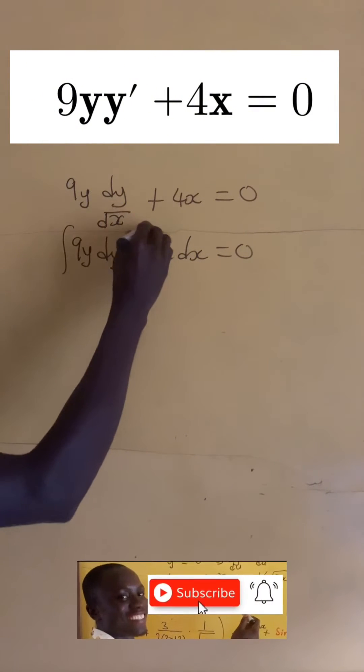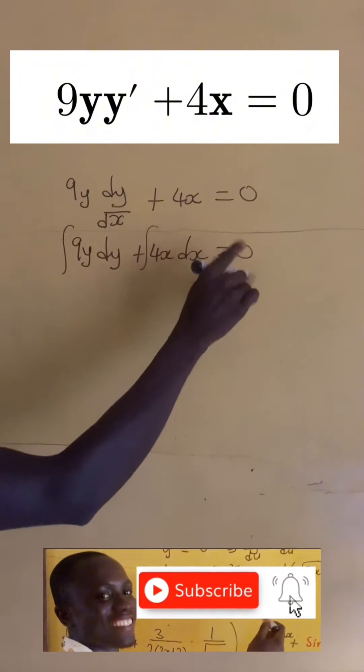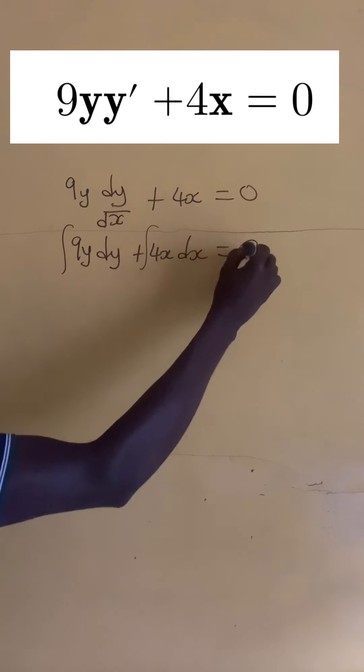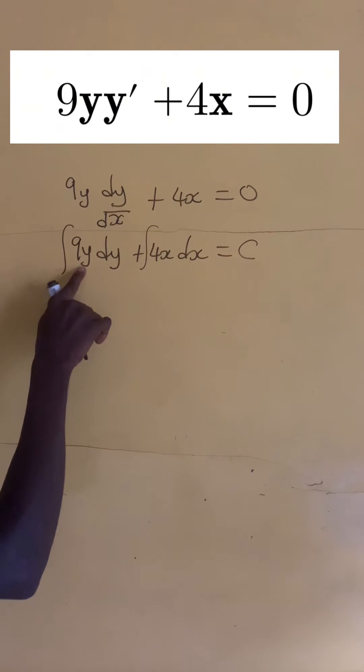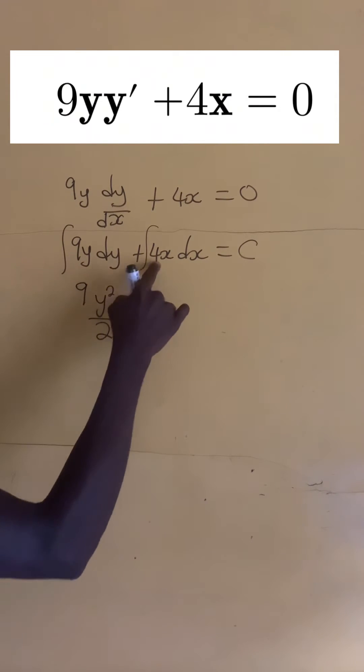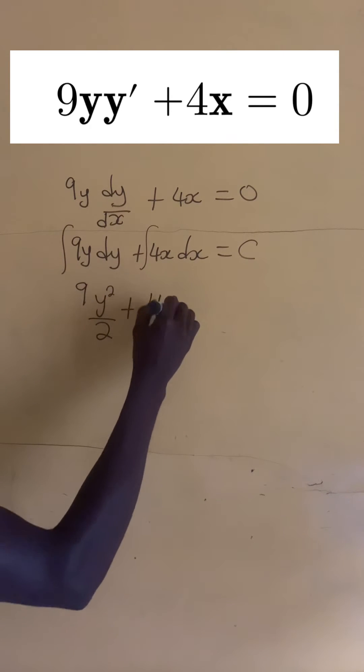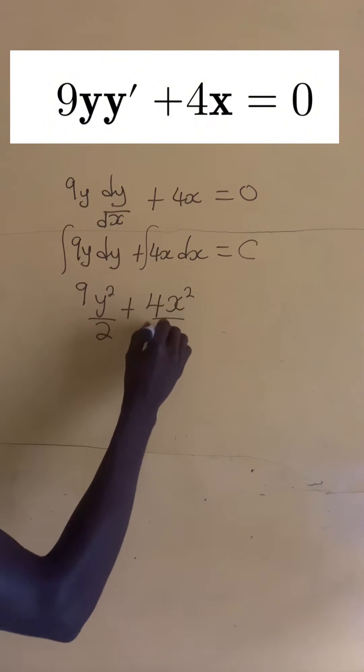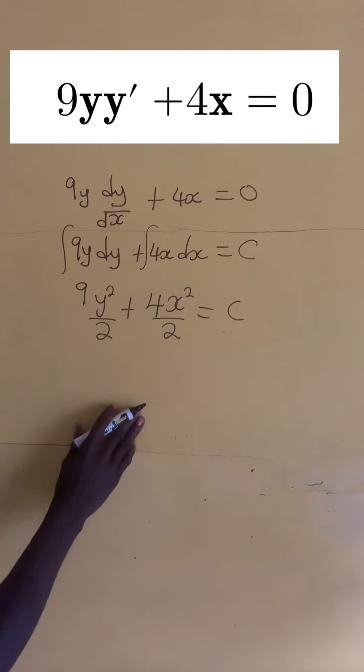Now if we integrate each term, the integral of a constant is still a constant, so let's call it constant c. If we integrate 9y we get y squared divided by 2 times 9, and if we integrate 4x we get 4 times x squared divided by 2 equals c.